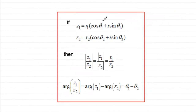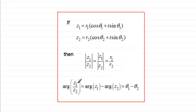In this tutorial, if we have two complex numbers z1 and z2 expressed in modulus-argument form, then when we divide them, the modulus of z1 divided by z2 is equal to the modulus of z1 divided by the modulus of z2, or r1 over r2. And the argument of z1 divided by z2 equals the argument of z1 minus the argument of z2, or theta1 minus theta2.